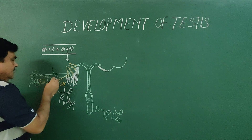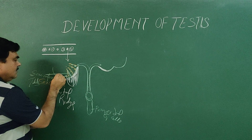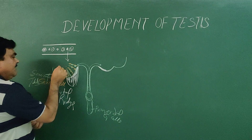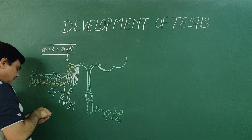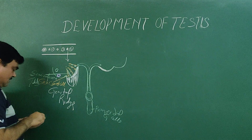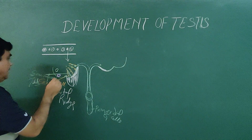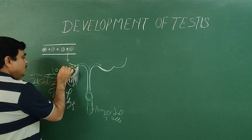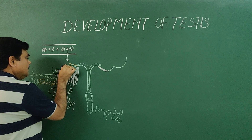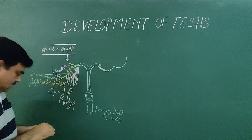Another structure here is the paramesonephric duct. And there is another structure, that is the mesonephric duct. This mesonephric duct is connected with the mesonephric tubules — these are the mesonephric tubules.